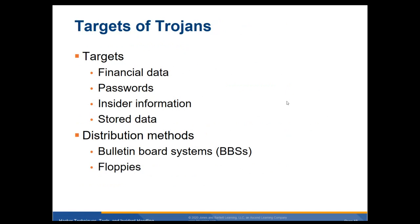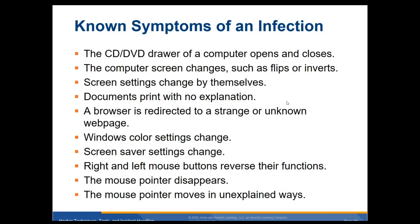Trojan targets include financial data, passwords, and insider information, as well as any stored data. Sources where you can get them include USB drives, bulletin boards, and emails.